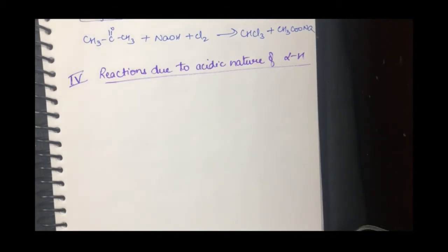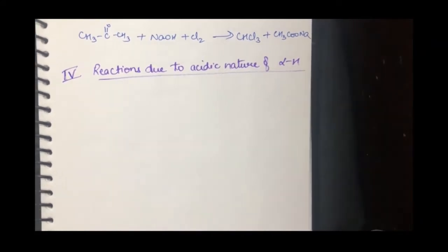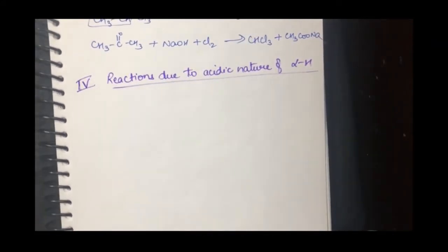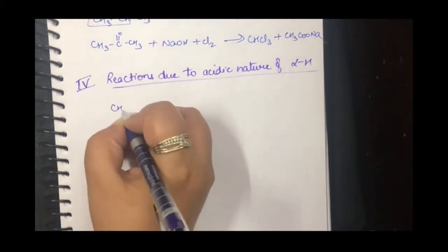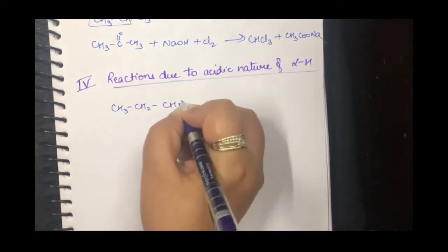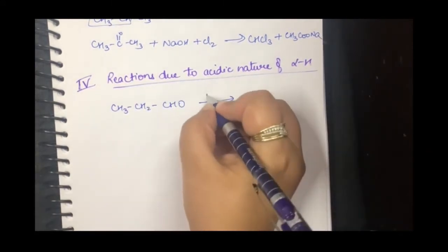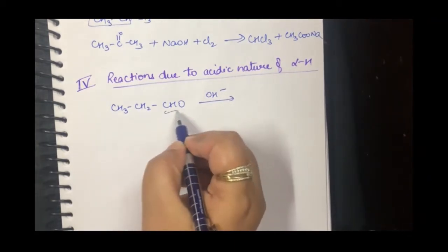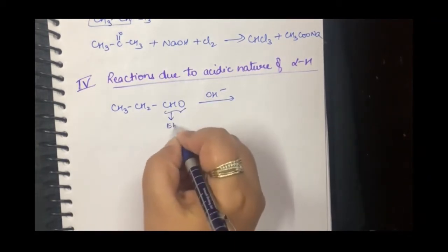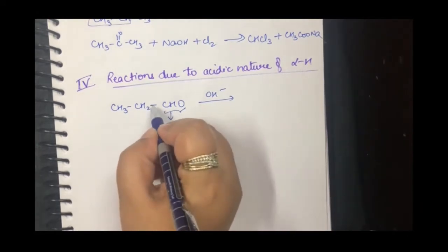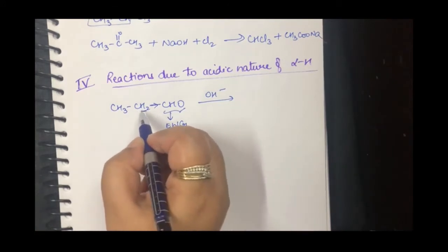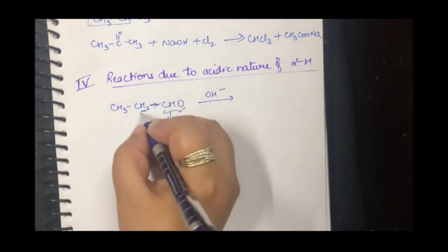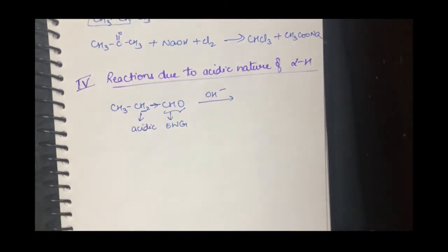This topic is important because it has three name reactions, and very important name reactions from which either a direct or indirect question definitely comes every year. Now, reactions due to the acidic nature of alpha hydrogen. For example, I take an aldehyde. We know that the carbonyl group is an electron withdrawing group, so it withdraws electrons towards itself. That means this hydrogen, because the electron density is shifting away, has become acidic.